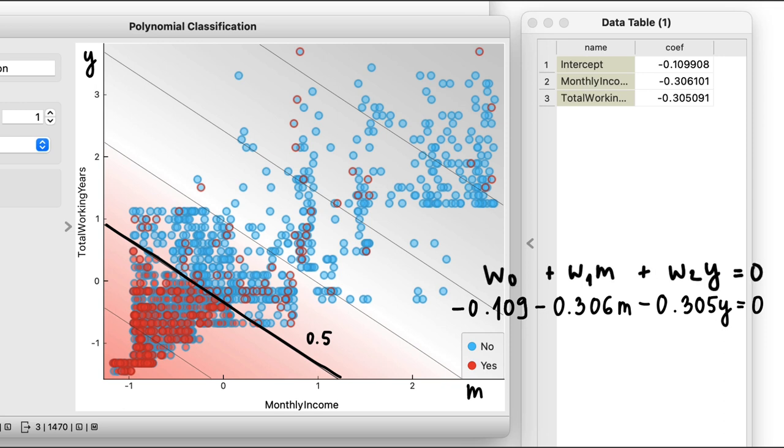The weights w1 and w2 define a vector that is perpendicular to the decision boundary and, as expected, points toward the red points, those of the target class. In our case, the two features have approximately equal weights, so we could say that they affect the class about equally.